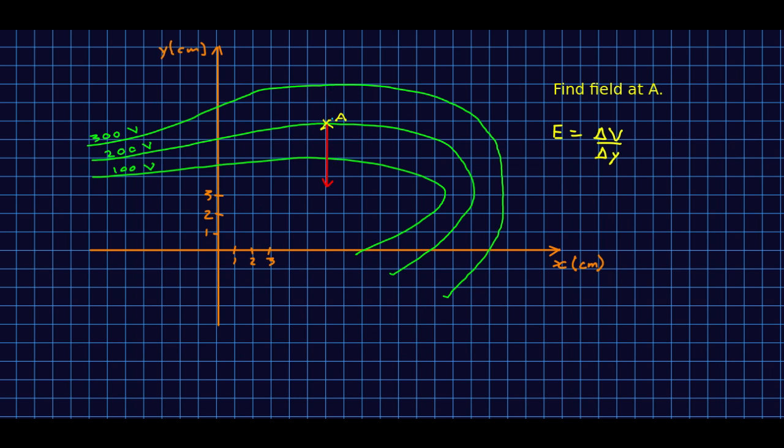Well look, in a distance of four centimeters here, there's a 200 volt drop. So it's 200 volts over 0.04 meters, and that is 5,000 volts per meter. Now notice that's not the units we've seen before, but a volt is a joule per coulomb, and a joule is a newton meter. The meters cancel and we're left with newtons per coulomb as we expect for an E-field. So volts per meter are also another way of writing the units for an E-field.